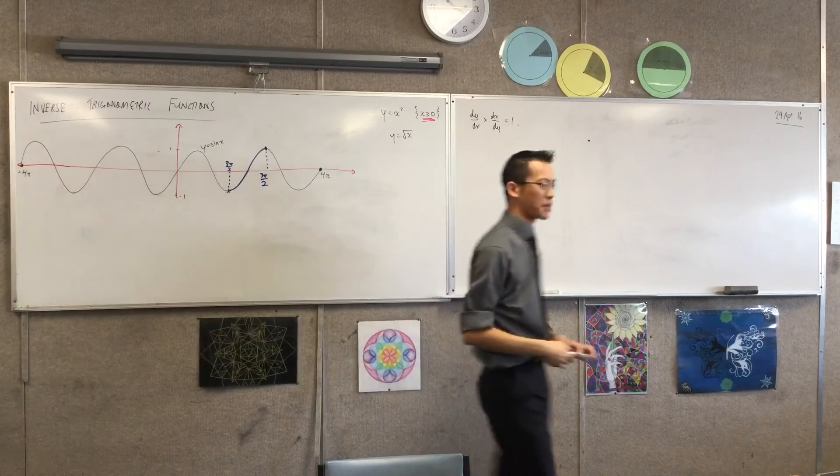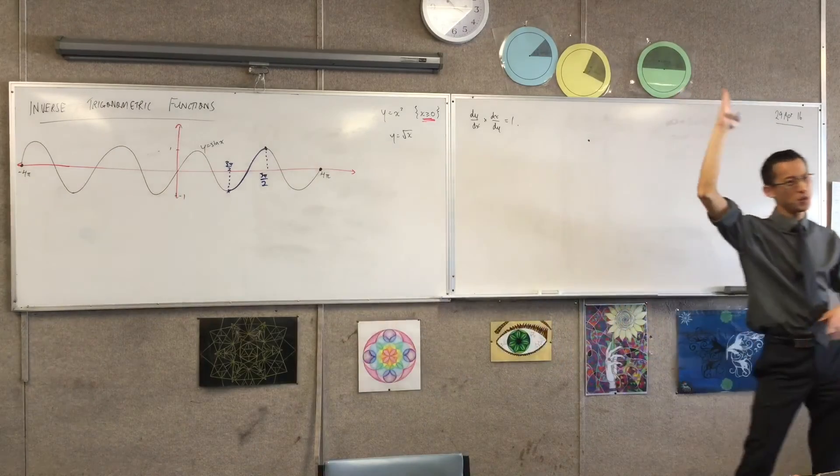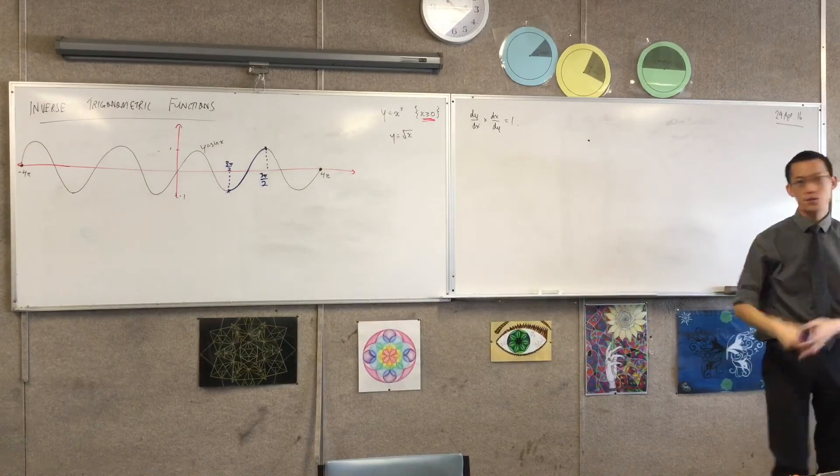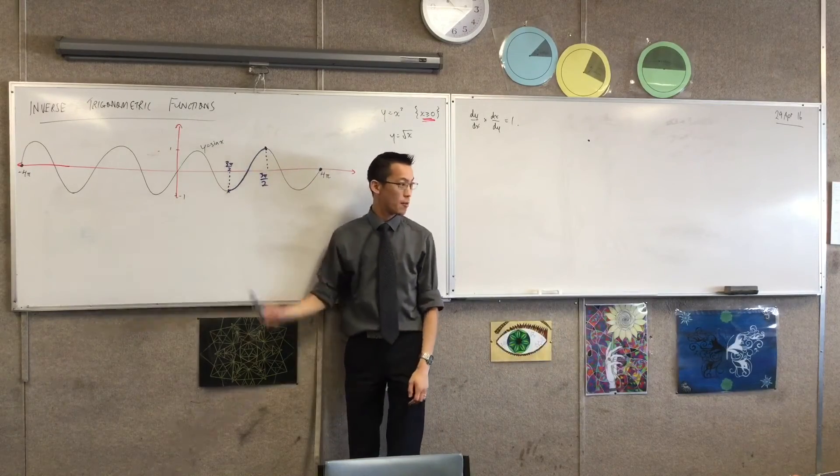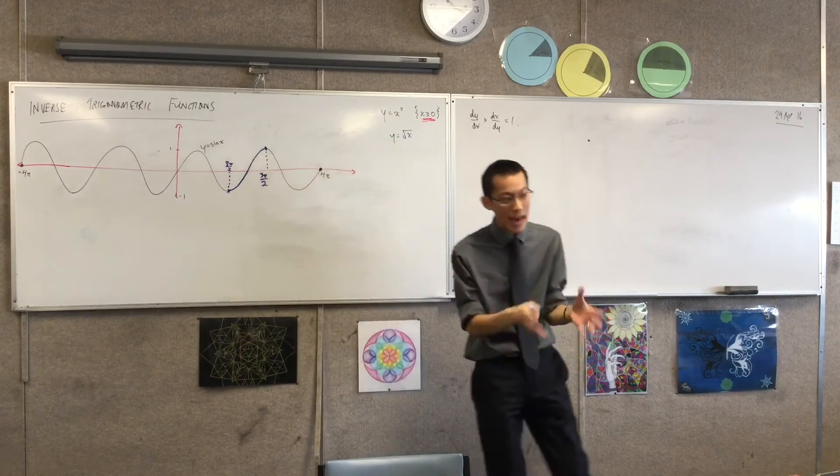Okay so if I wanted to I could say y equals sine x from three π on two to five π on two. Tada. Restricted it, passes the horizontal line test in this domain, thumbs up. I can make that the definition for the inverse if I wanted to.